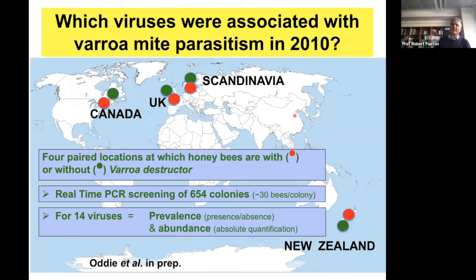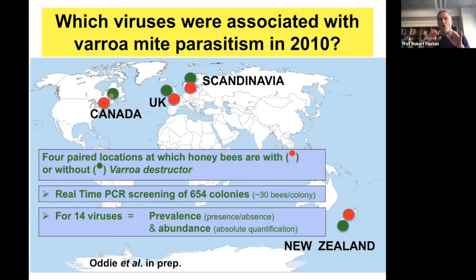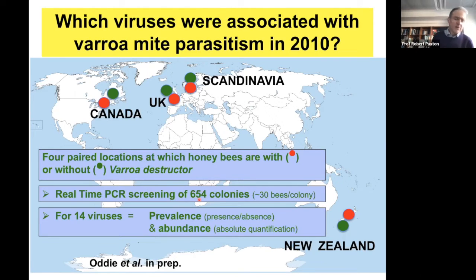We know one virus is clearly transmitted by varroa and has spread around the world. We wanted to know: is this the only virus associated with varroa mites? So we sampled honeybee colonies in locations adjacent to locations without varroa mites, and screened those colonies for 14 viruses using qPCR — over 600 colonies in total. We can see what consequence varroa parasitism has for viral titers and prevalence in those locations. Looking at the prevalence data: the top row shows colonies from the four locations with no varroa mites, and the bottom row represents locations where varroa mites were present. Many viruses are more prevalent when varroa is present — our honeybees are much more infected with viruses when varroa mites are present.